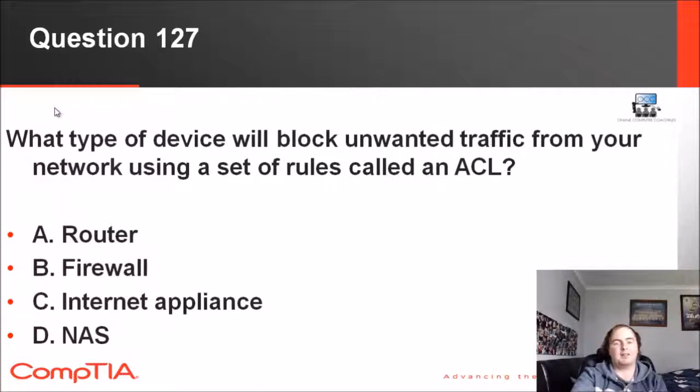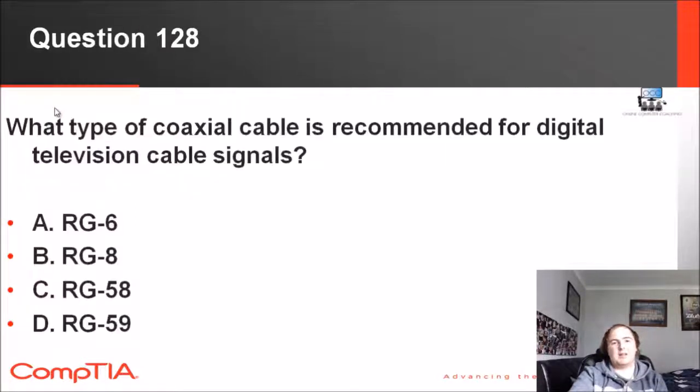127: What type of device will block unwanted traffic from your network using a set of rules called an ACL? We've got router, firewall, internet appliance, and a NAS. A NAS is network attached storage—that's just storage on the network. Internet appliance—is it the oven, microwave? Then we've got router, which is sort of correct, but it's not its prime function. It is the firewall that does that. In modern day routers, they have firewalls built into them, but a prime function is to connect networks between each other.